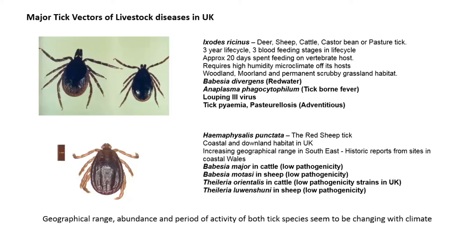Haemaphysalis punctata, the red sheep tick, has a coastal and downland habitat in the UK and is a tick of the grasslands. It seems to have an increasing geographical range in the southeast, and there are historic reports from sites in coastal Wales, though these haven't been checked recently. It transmits Babesia major in cattle, Babesia motasi in sheep, Theileria orientalis in cattle, and Theileria luwenshuni in sheep — these are described as having low pathogenicity in livestock.